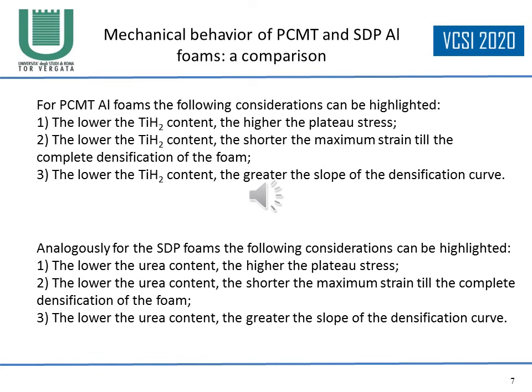For PCMT aluminum foams, the following considerations can be highlighted: the lower the titanium hydride content, the higher the plateau stress; the lower the titanium hydride content, the shorter the maximum strain until complete densification of the foam; and the lower the titanium hydride content, the greater the slope of the densification curve.